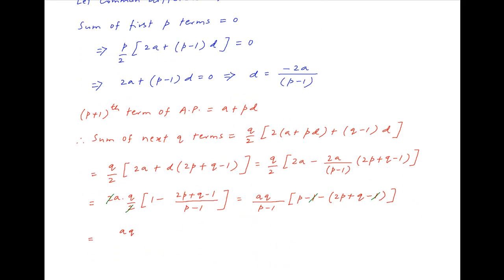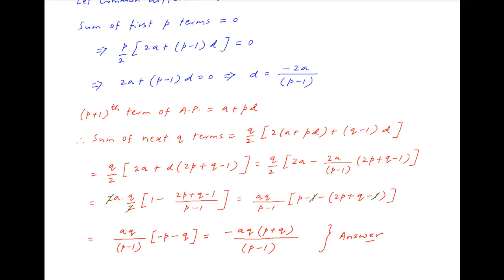This simplifies to aq upon (p minus 1) multiplied by (minus p minus q), which equals minus aq times (p plus q) divided by (p minus 1). And this is the required answer.